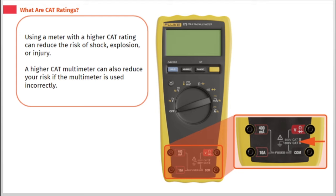Using a meter with a higher CAT rating can reduce the risk of shock, explosion, or injury. A higher CAT multimeter can also reduce your risk if the multimeter is used incorrectly.